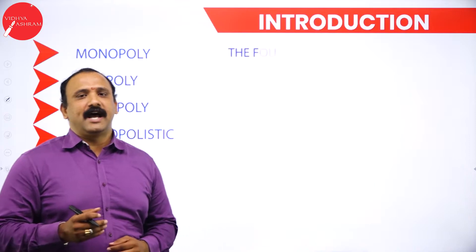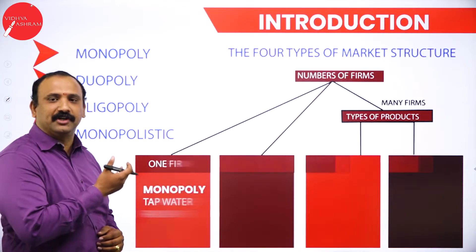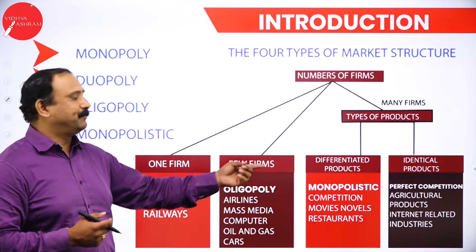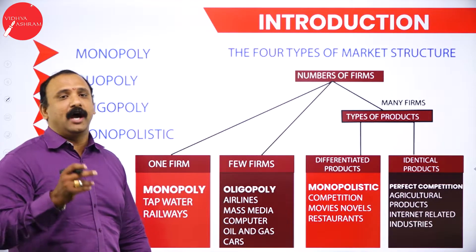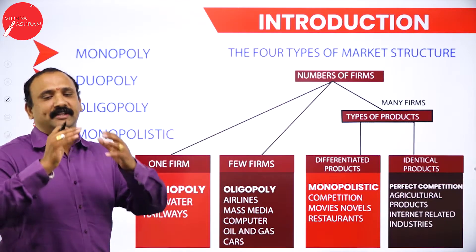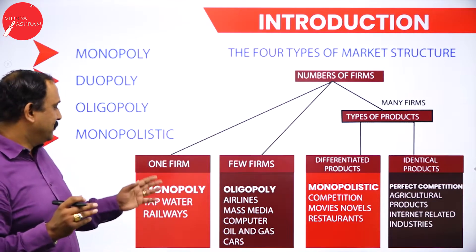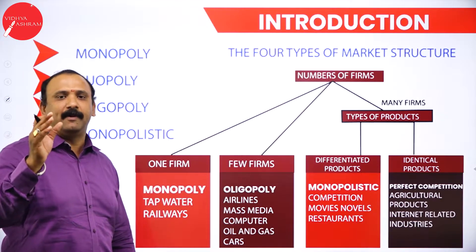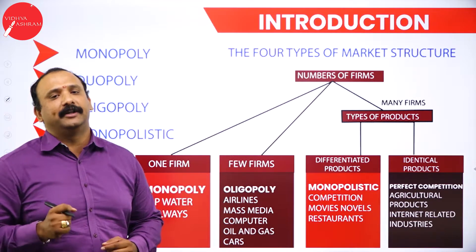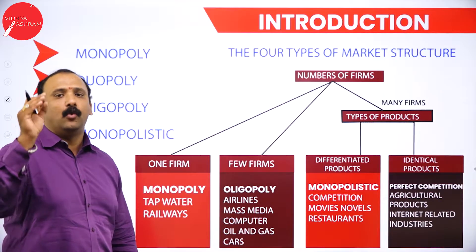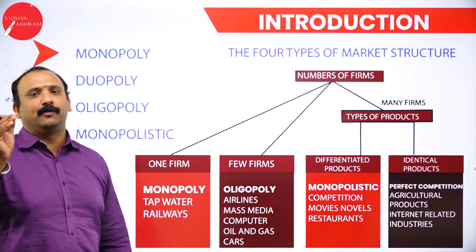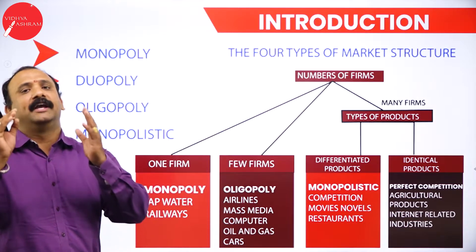Let's understand the different types of market structures. We have monopoly, oligopoly, monopolistic competition, and perfect competition. In this chapter we will look into monopoly, duopoly, oligopoly, and monopolistic competition. Monopoly means a single player in the market who dominates the price and controls the entire market. There is only one seller, whatever price he fixes the consumers have to accept — there is no option left for them.